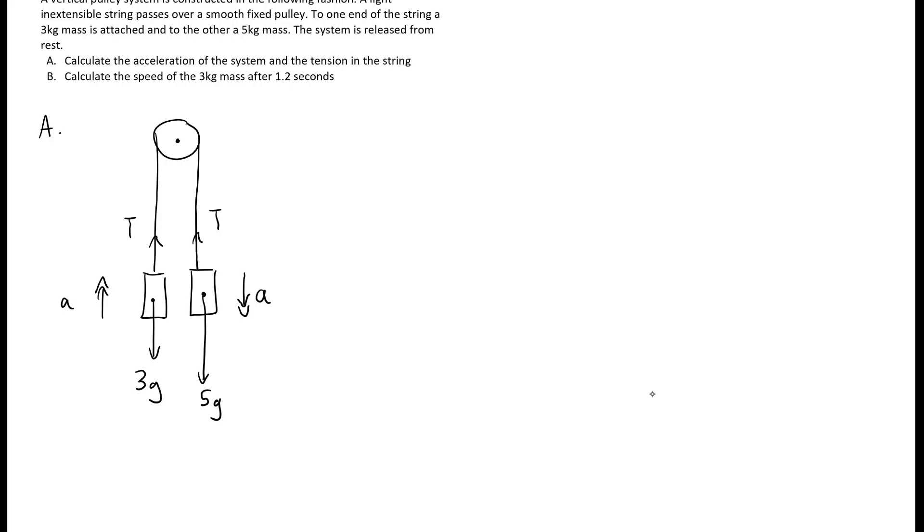So those are the first three steps. The fourth step is to apply F equals ma to each object. So let's look at the 3g mass. We'll take up to be positive - typically we'll use the direction of the acceleration as the positive direction. Then this will be tension acts up, weight acts down, that's why we're subtracting, and then it accelerates up with acceleration a, so 3a. And then if we apply the same thinking to the other object here, the 5g weight,